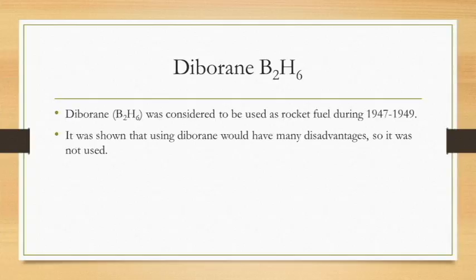Diborane, B2H6, was considered to be used as rocket fuel during 1947 through 1949. It was shown that using diborane would have many disadvantages, but let's say it was used for rocket fuel.